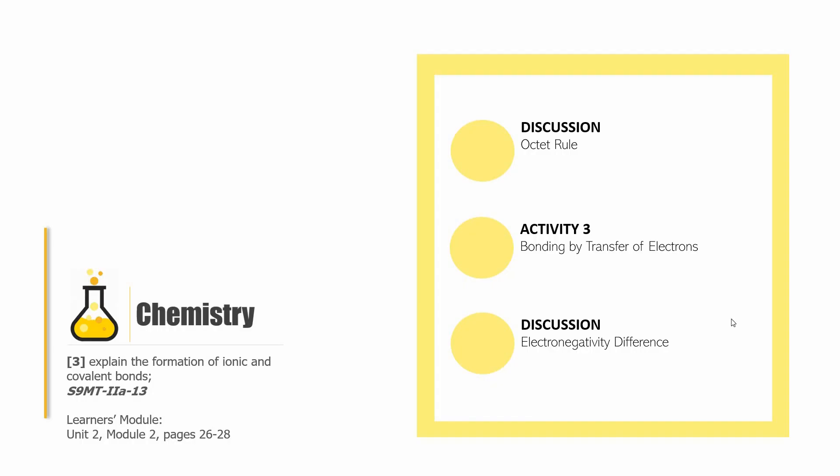Hello and welcome back to Grade 9 Chemistry. This is Sir Carlos, and we are still trying to finish Learning Competency Number 3: Explain the Formation of Ionic and Covalent Bonds. If you want to follow through with reading material, we have your Learner's Module — open it in Unit 2, Module 2, Pages 26 to 28.